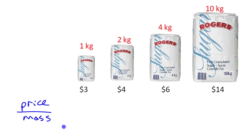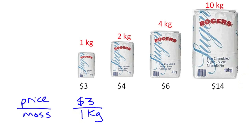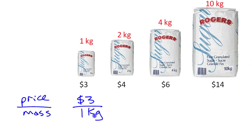The first bag costs three dollars and is one kilogram. Writing that as a rate: three dollars for one kilogram, which you can write as three dollars per kilogram.